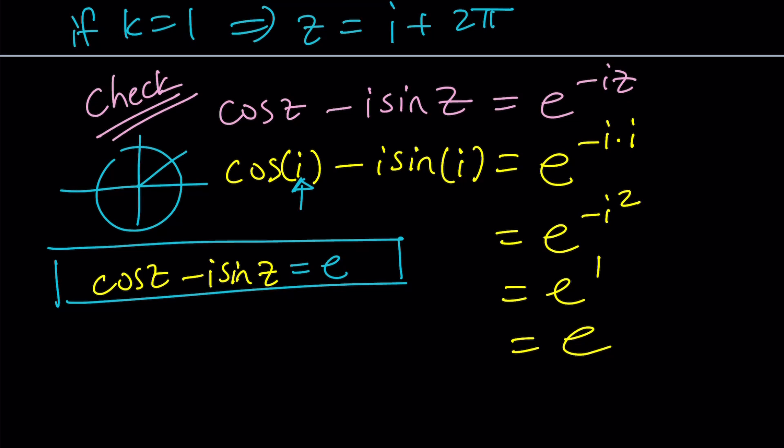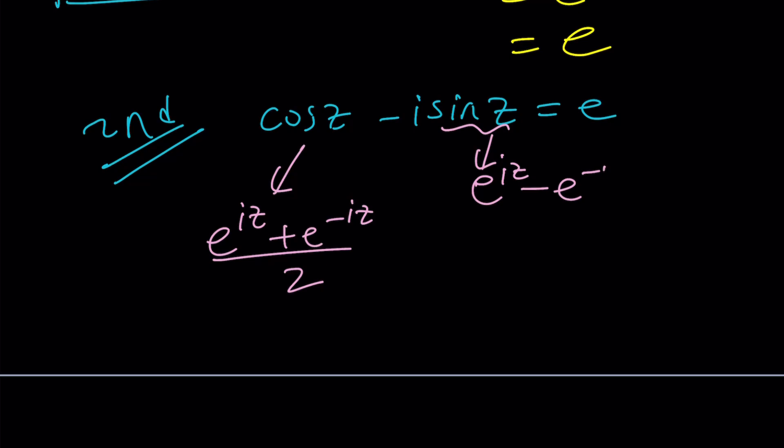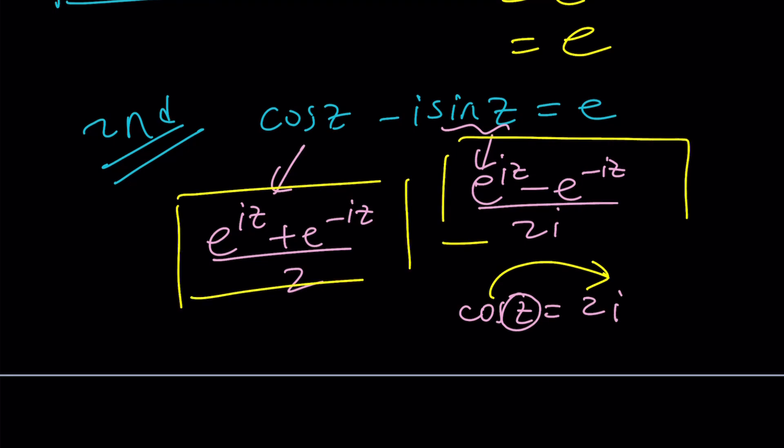If you are ready we can move on with the second method. Now we have an equation cosine z minus i sine z equals e. We have formulas for cosine and sine right? They come from Euler's formula, pretty much the same thing but just presented a little differently. So cosine z can be written as e to the i z plus e to the negative i z divided by two, and sine z can be represented as e to the i z minus e to the negative i z divided by two i. These formulas allow you to evaluate the cosine of a complex number. Let's plug them in.